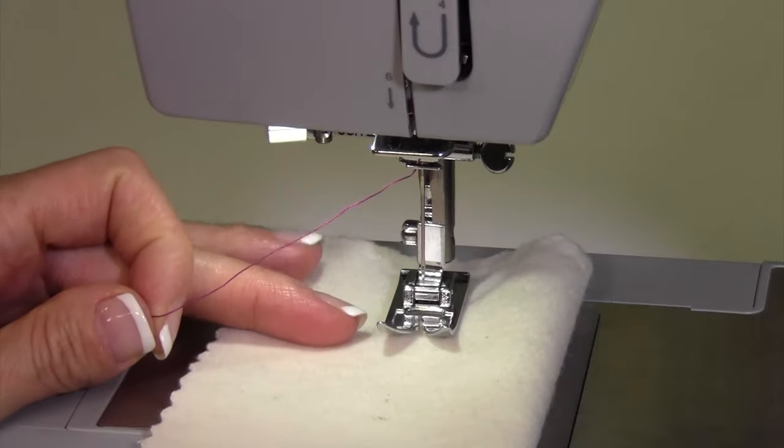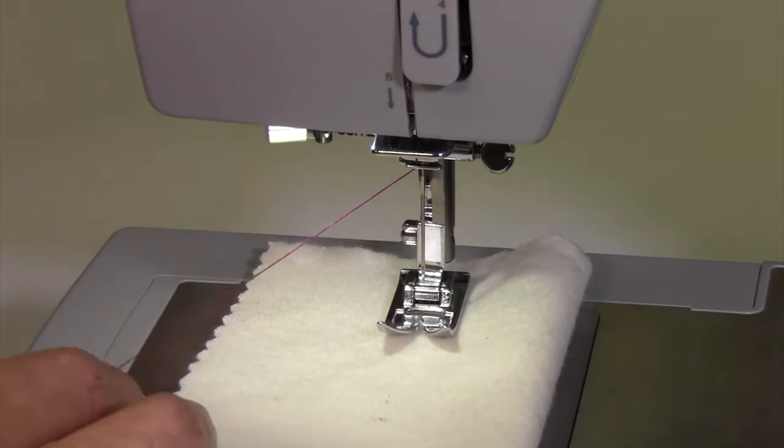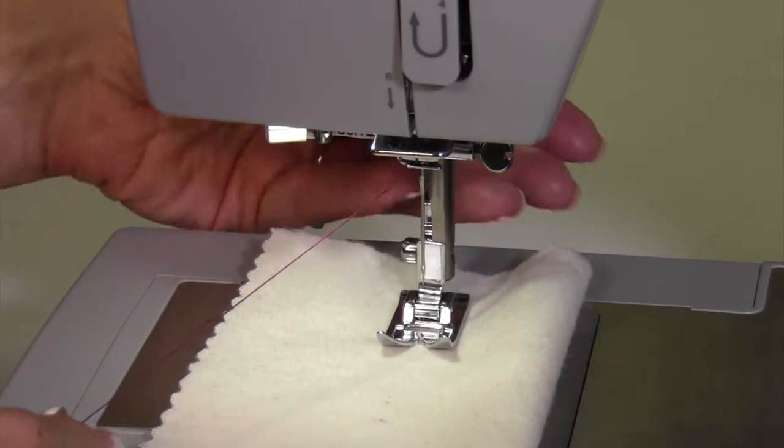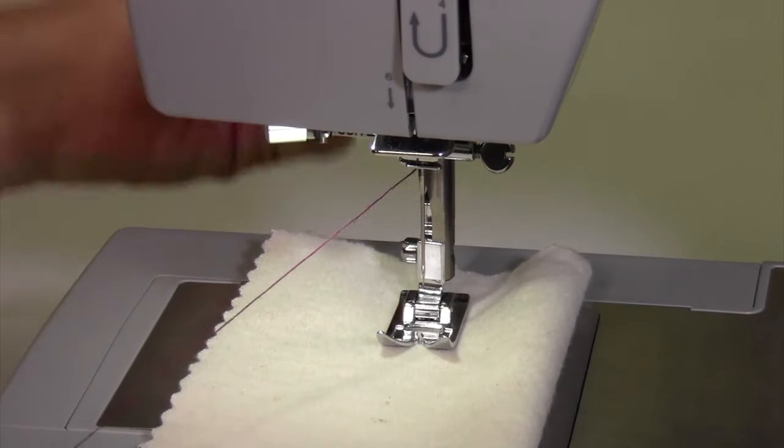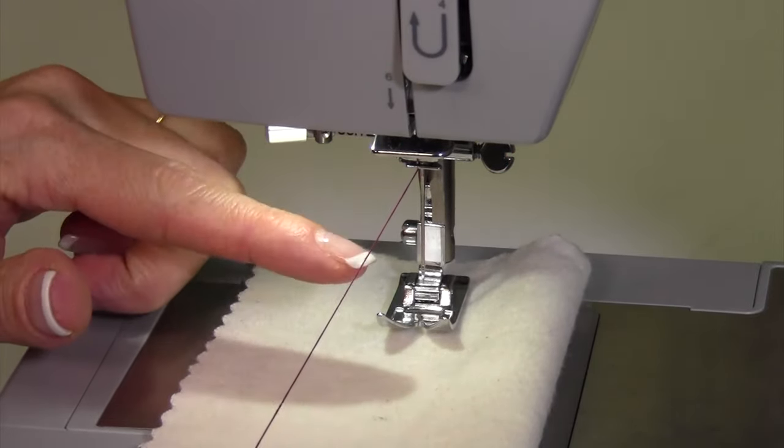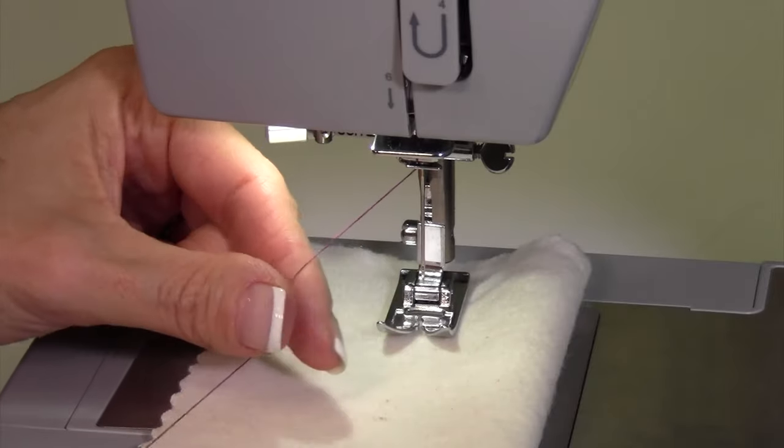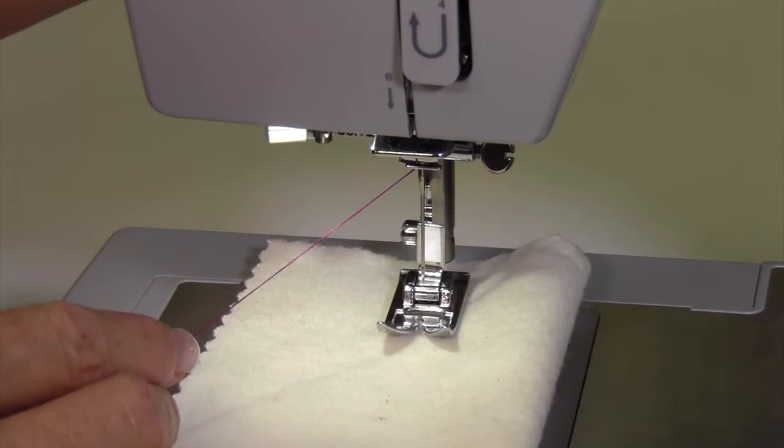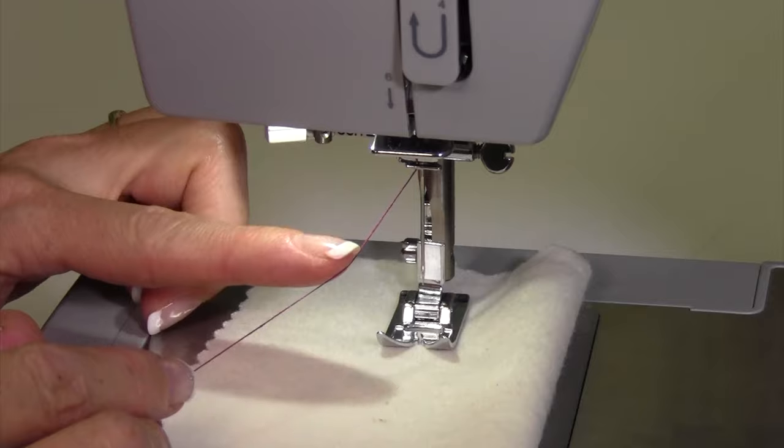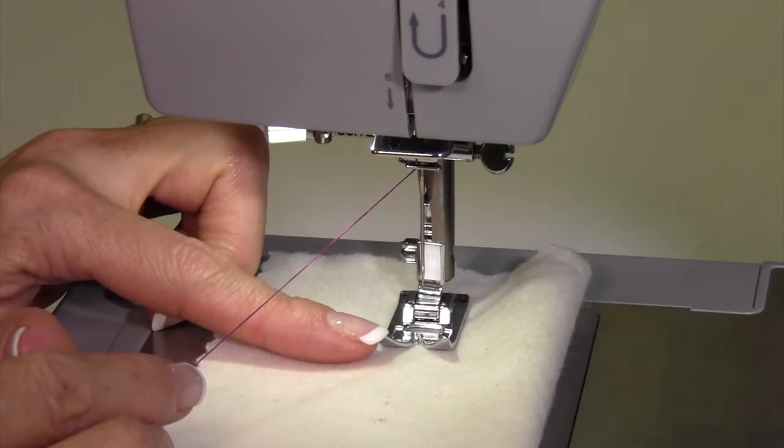Now here's a little trick. Right now the presser foot is up, but if I go ahead and lower it, the thread is going to be tighter. If I leave it up, the thread can sometimes just continue to pull through as I tug on it. Make it a little resistance on it, plus you get a little bit more space down below here.